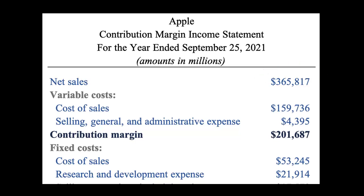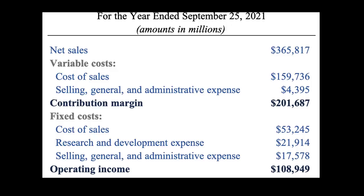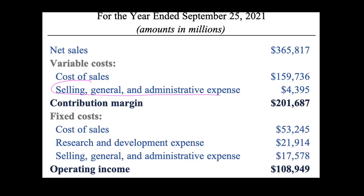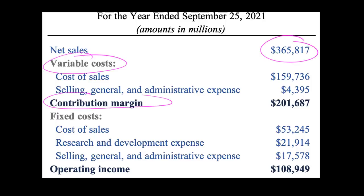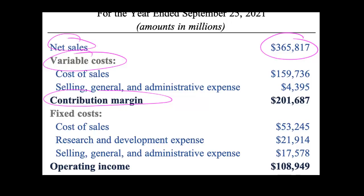We've got the same net sales as before, but now we're calculating contribution margin, not gross margin. With gross margin, we took net sales and subtracted the entire cost of sales. But now we are only subtracting the variable component of cost of sales, plus the variable component of SG&A — say, sales commissions. That gives us the contribution margin for Apple. The fixed portion of cost of sales — about $53 billion of fixed manufacturing overhead — is not deducted when calculating contribution margin; that's why it appears below. When you calculate gross margin, you subtract the entire cost of sales, both the variable and fixed components.